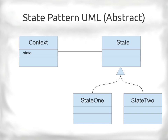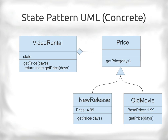The state pattern is like that, except this is the class view, not the state view. You have a context that has state, represented by a state object or interface. You can have sub-states like state one or state two with separate and distinct behavior. For example, business rules for new releases versus old movies in a video rental — a new release might have the first two days be more expensive, while an old movie might have a deal like a dollar for seven days.